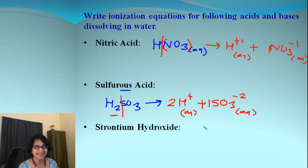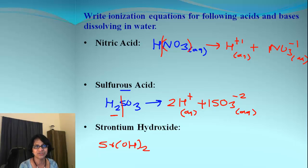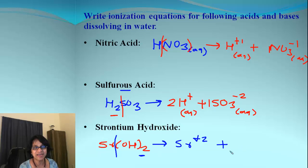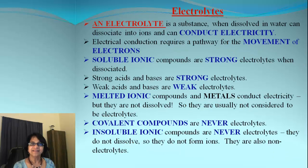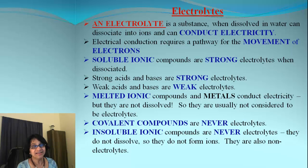The sulfate and hydrogen ions will be aqueous ions. Let's do one more example: strontium hydroxide, Sr(OH)2. When that dissociates we get strontium ion with charge +2 and two hydroxide ions, and both will of course be aqueous ions.